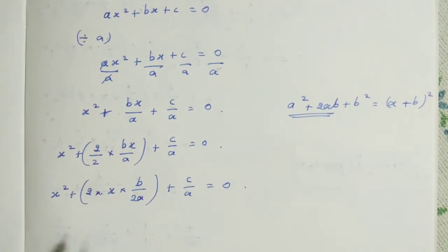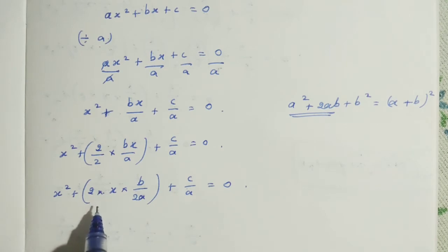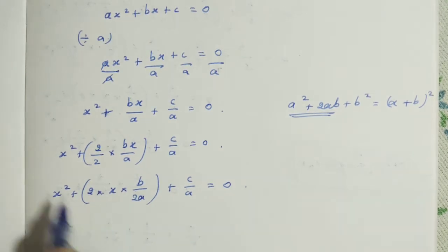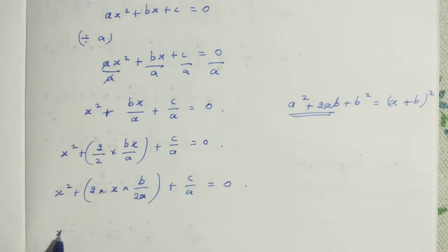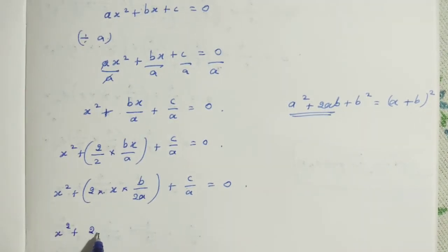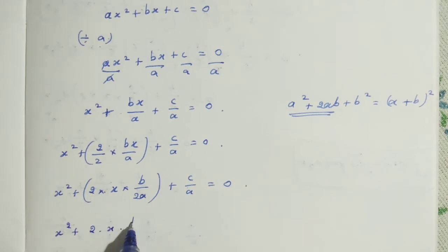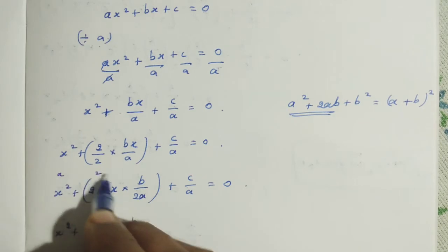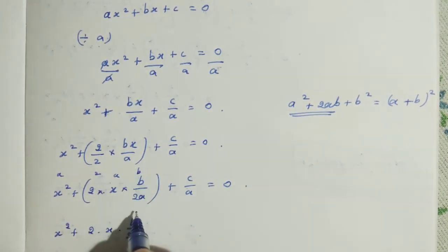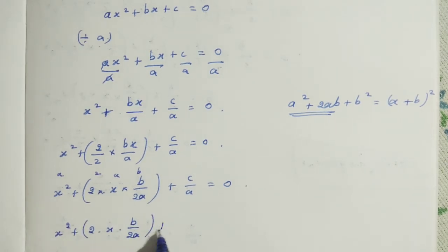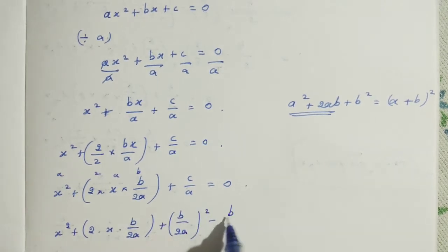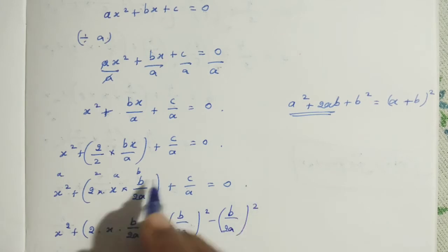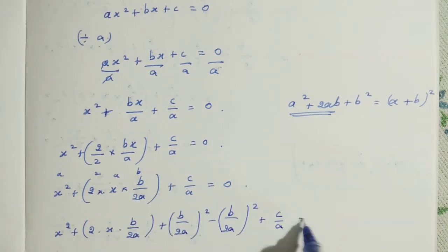Next step: X squared plus 2 times X times B over 2A, plus C over A equals 0. It is now in the form of X squared plus 2 times X times B — here the B value is B over 2A. Now we need a B squared term, so we add (B over 2A) whole squared and subtract (B over 2A) whole squared, plus the constant C over A, which equals 0.